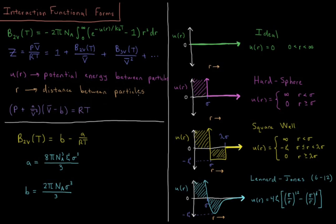So what are some of the functional forms we see for various models of how gas particles interact? First, for the ideal gas, u(r) equals zero. Ideal gas particles do not interact, they do not take up space, they're completely independent of one another. If you put zero in the integral, e to the minus zero is one, one minus one is zero, so the whole integral goes to zero.